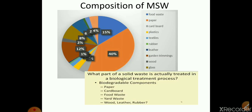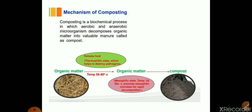From the composition of municipal solid waste, about 40% of the waste is paper waste and about 15% is food waste. The majority of municipal solid waste comprises paper, cardboard, food waste, yard waste, wood, etc. All these are biodegradable components that can be converted into compost through the composting process.